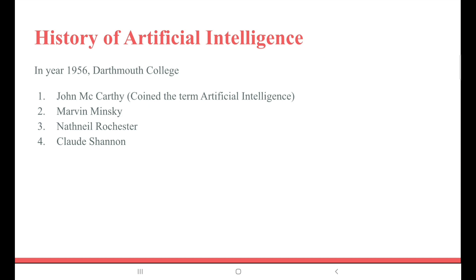History of Artificial Intelligence: In the year 1956, in Dartmouth College, there were four brilliant minds — John McCarthy, Marvin Minsky, Nathaniel Rochester, and Claude Shannon. These people sat together to think about a machine which can behave like a human. Among these people, John McCarthy coined the term Artificial Intelligence.